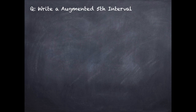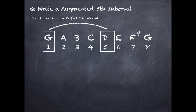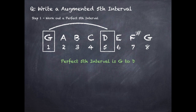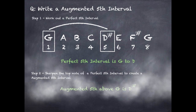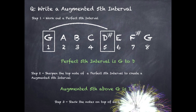To write an augmented fifth interval, step one: work out a perfect fifth interval. We go from the first note of our G major scale to the fifth note. So a perfect fifth interval is G to D. Step two: sharpen the top note of the perfect fifth interval to create an augmented fifth interval, so D becomes D sharp. Our augmented fifth above G is D sharp. Stack the notes on top of each other in the stave.